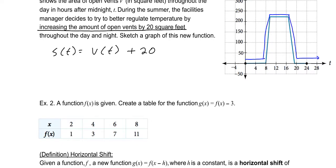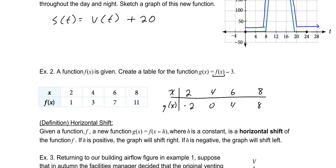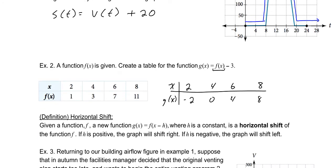Another way to think about vertical shifts is from a table. Given a function f of x, create a table for g of x equals f of x minus 3. For our x values, we are only changing the outputs, so the inputs stay the same. Each output will decrease by 3: 1 minus 3 is negative 2, 3 minus 3 is 0, 7 minus 3 is 4, and 11 minus 3 is 8. That function has now been shifted down 3 units.